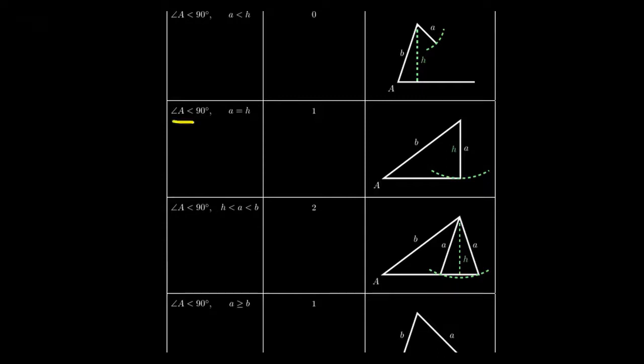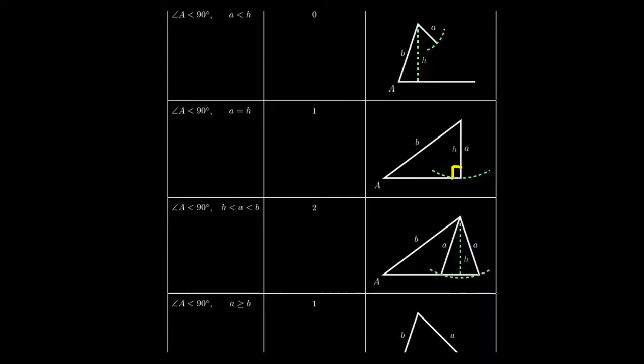Still sticking with the case where A is acute, what if a equals the altitude h? In that situation, you would get exactly one triangle. It would necessarily have to be a right triangle, because the altitude h and the side length a happen to be the same length. That would force angle B to be a right angle. Side length B is the hypotenuse of that right triangle.